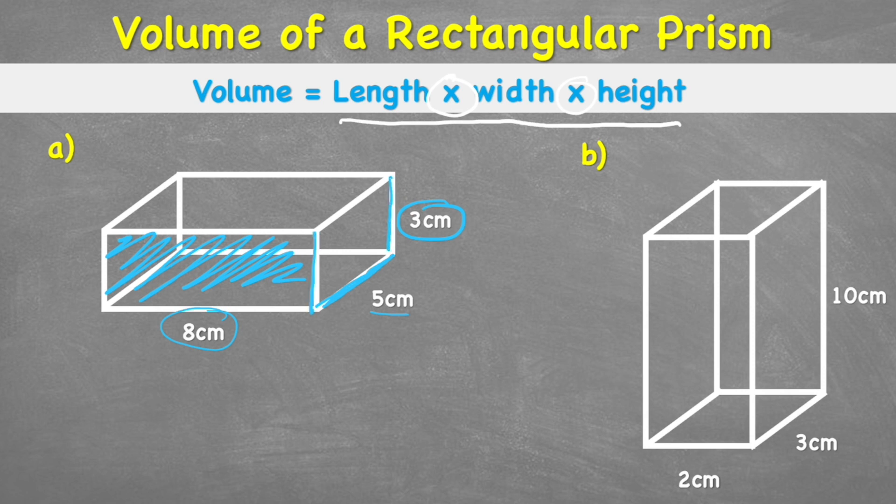But let's start by writing down our formula. So we have volume equals length times width times height. And let's now start to plug in some of our numbers. So I'd have volume equals 8 times 3. That's giving us our length and height of this first face. And then I'm going to multiply that by the width.